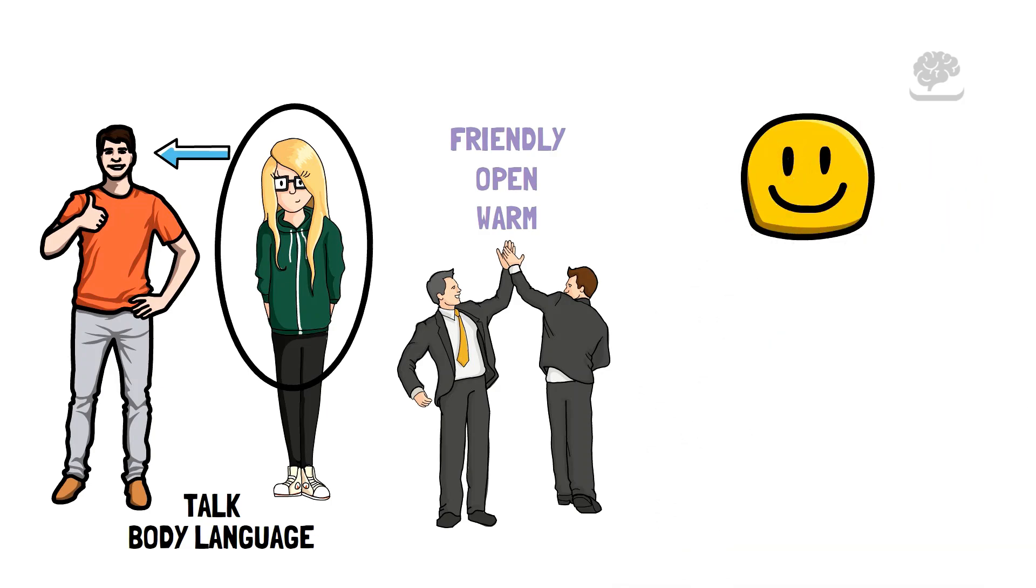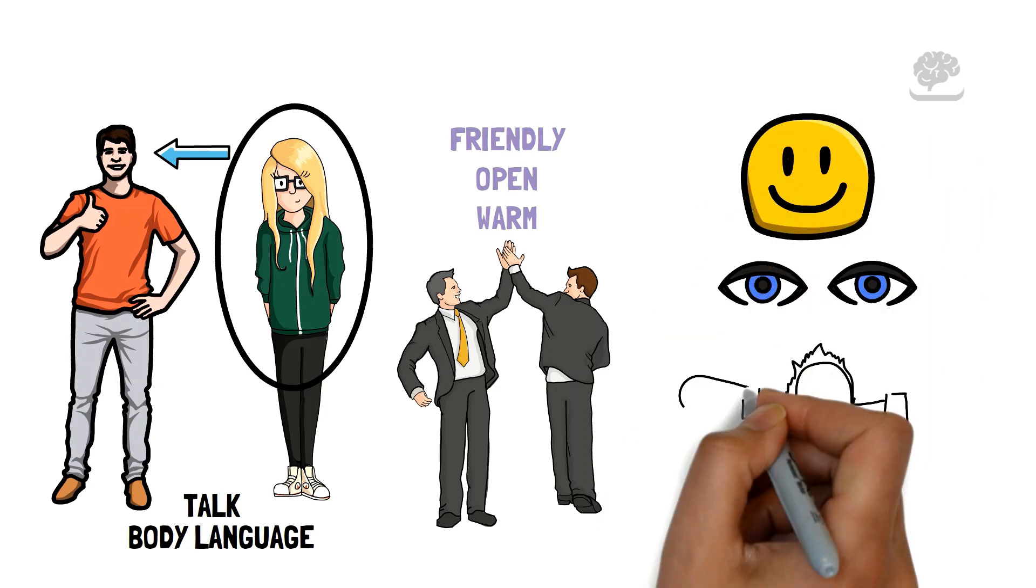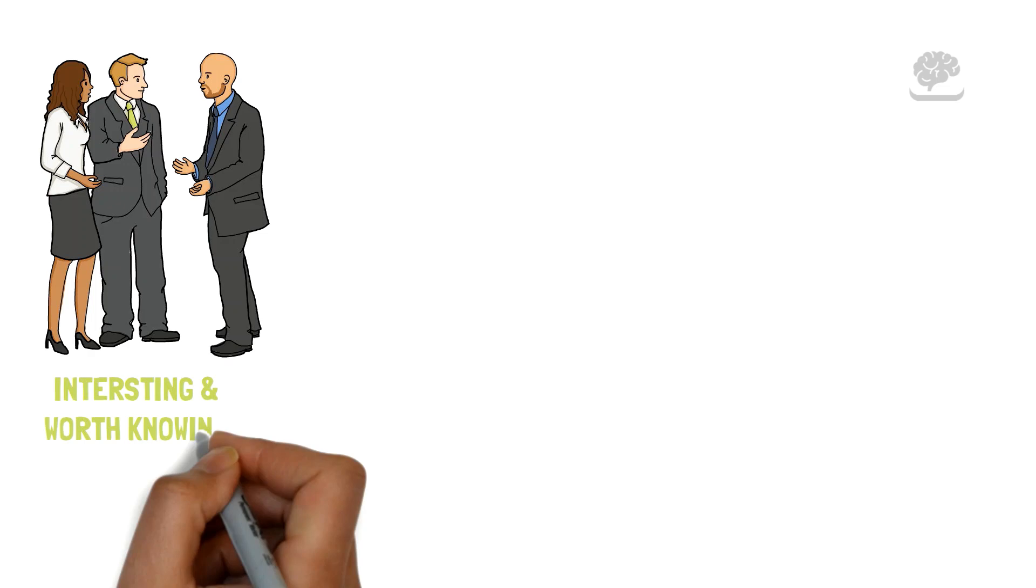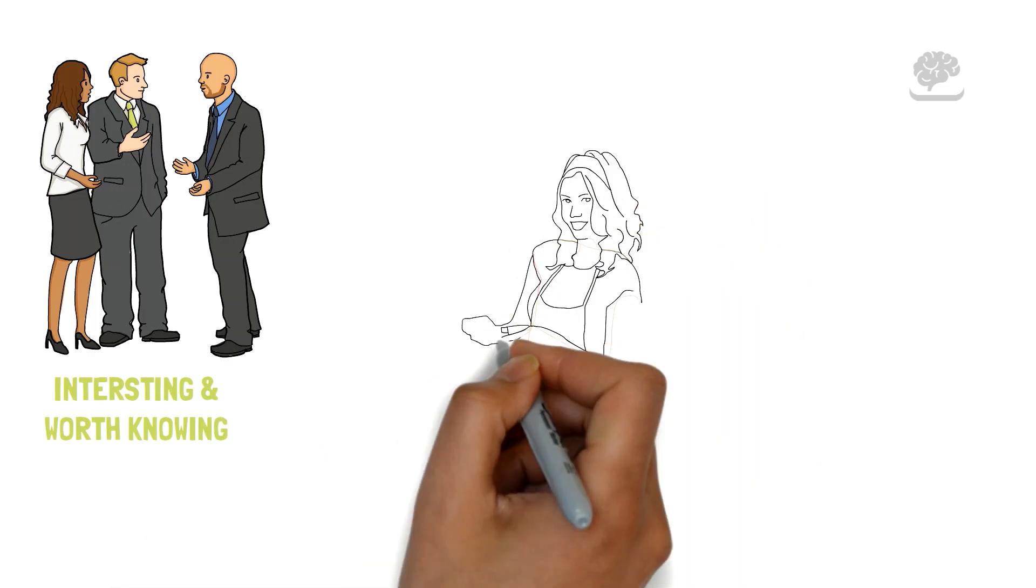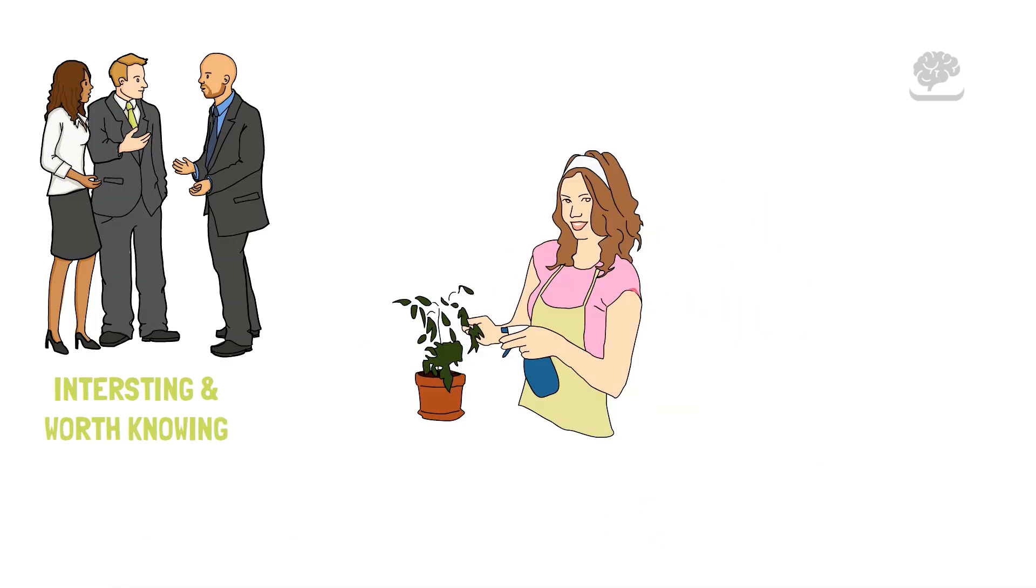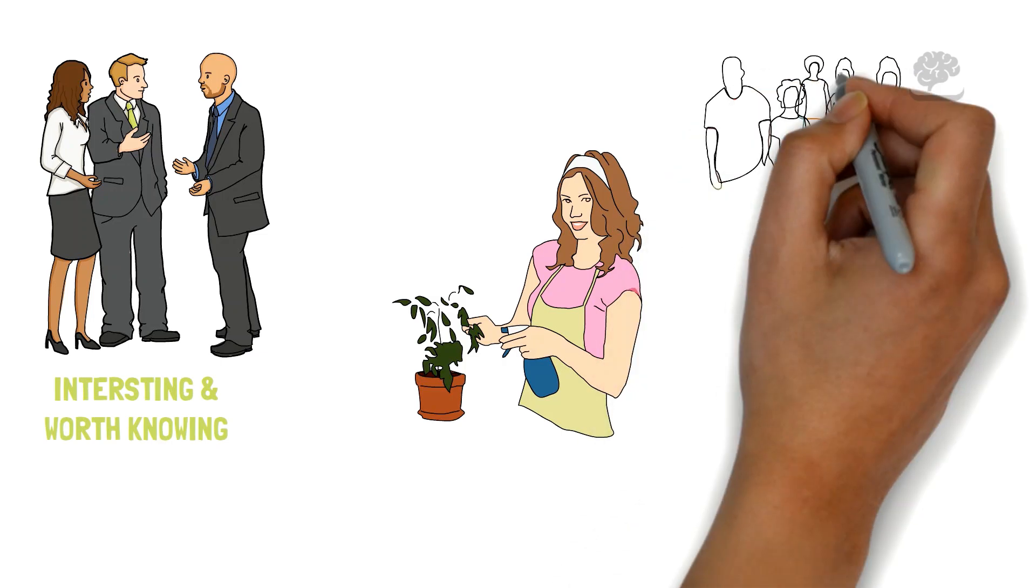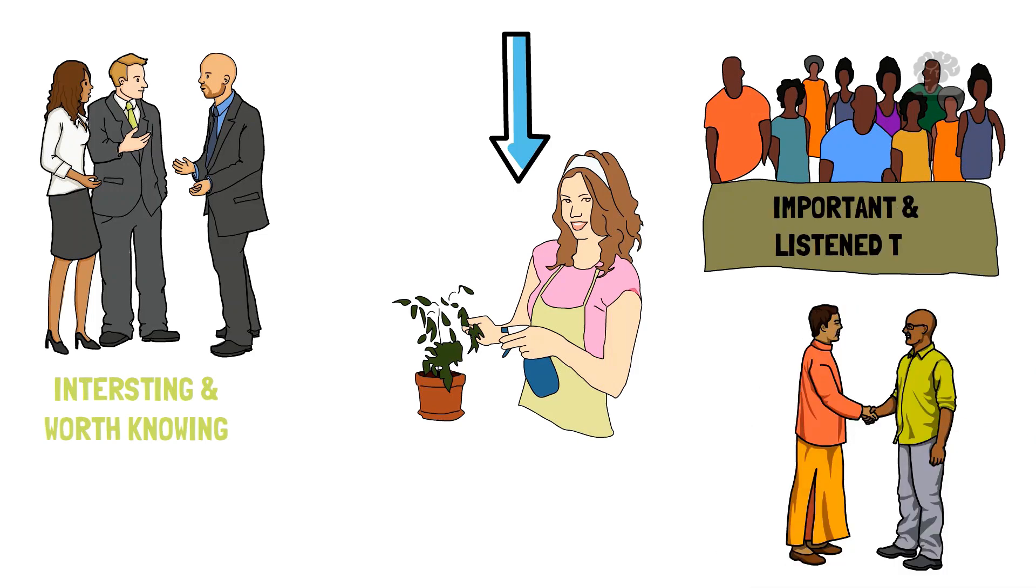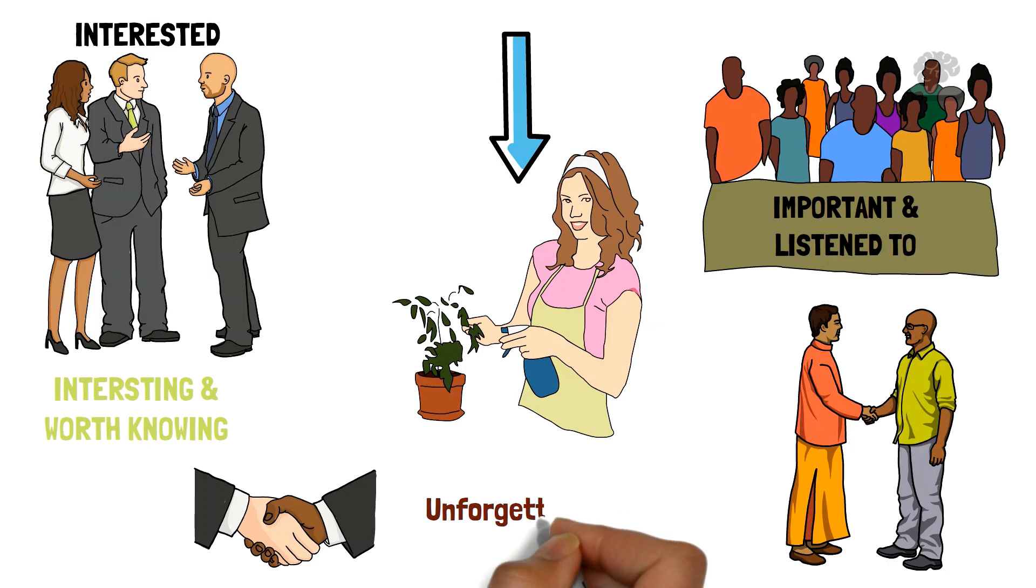Smiling, making eye contact, and having a relaxed posture helps attract strangers. People who talk to you out of the blue find you interesting and worth knowing. They like your positive energy and friendly personality that make them feel comfortable. The attention people give you shows how much they want to connect with you. Enjoy the sign of how charming you are. It shows your ability to make people feel important and listened to. Being genuinely interested in others and easy to approach helps create strong connections and unforgettable moments.